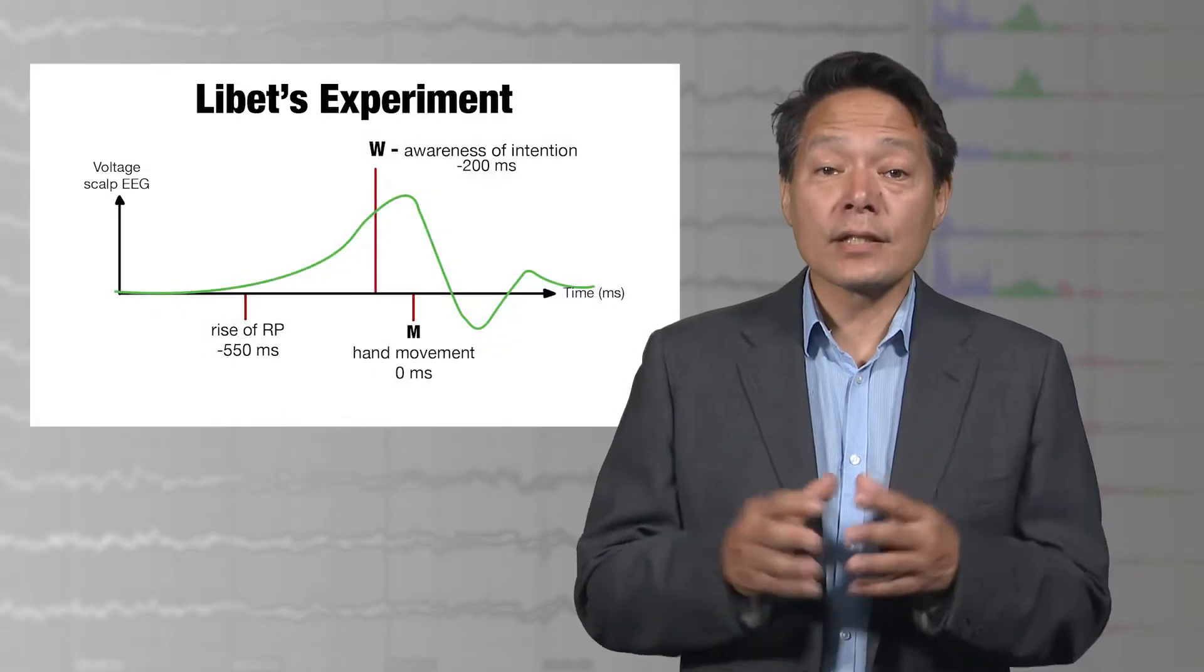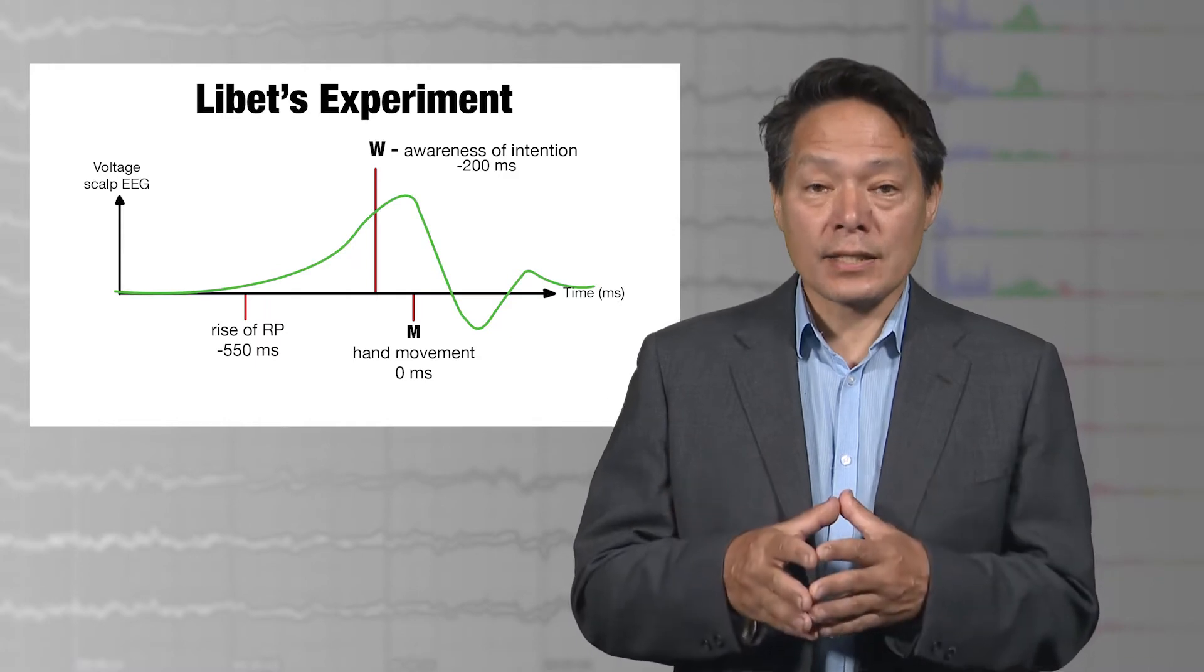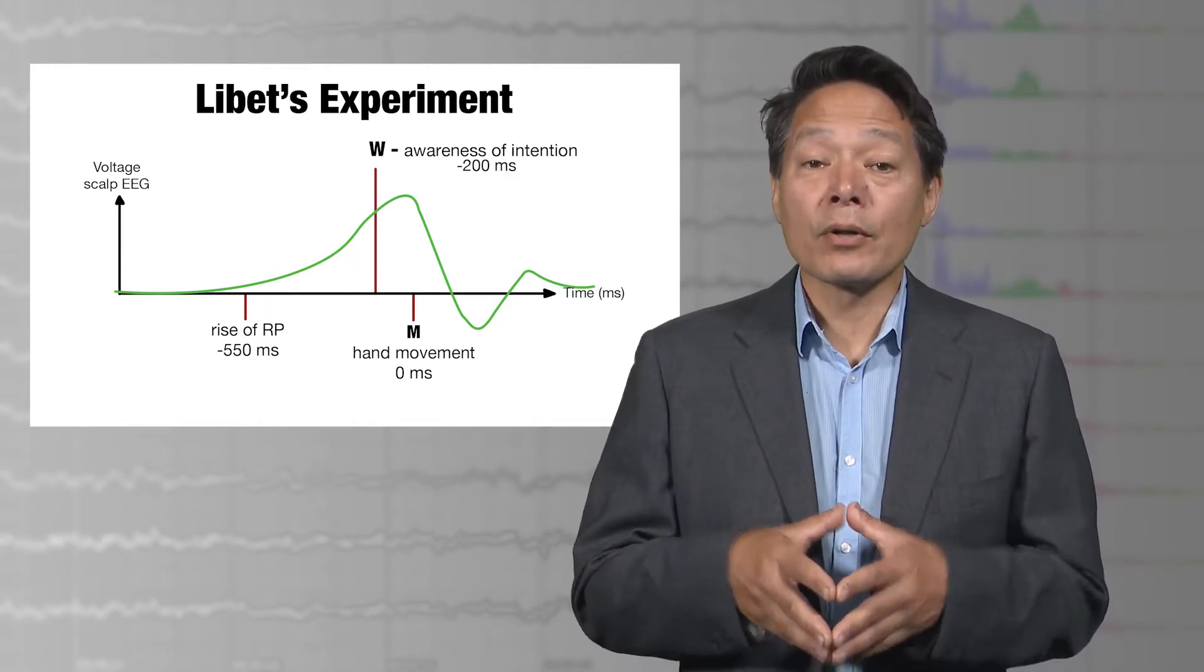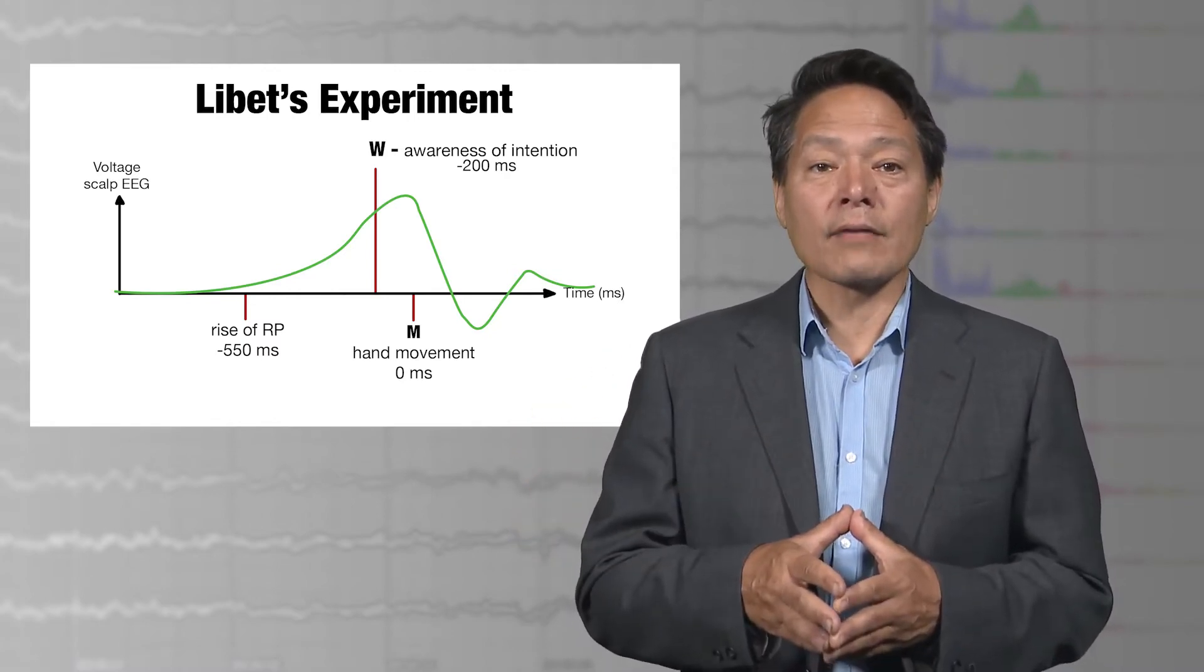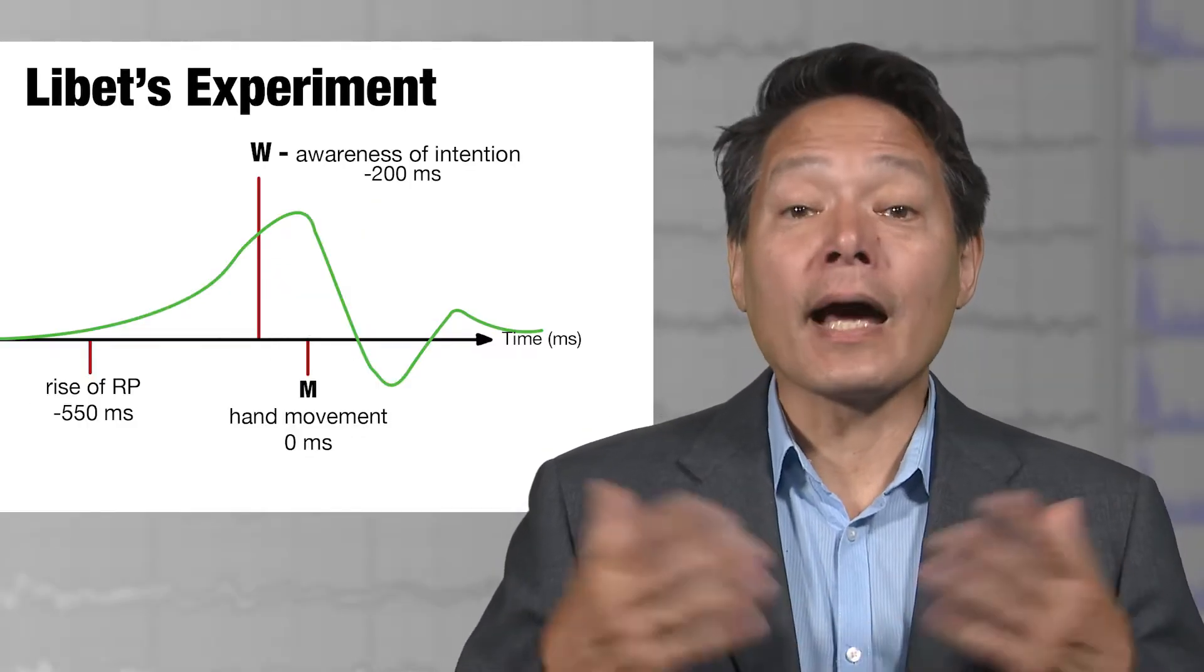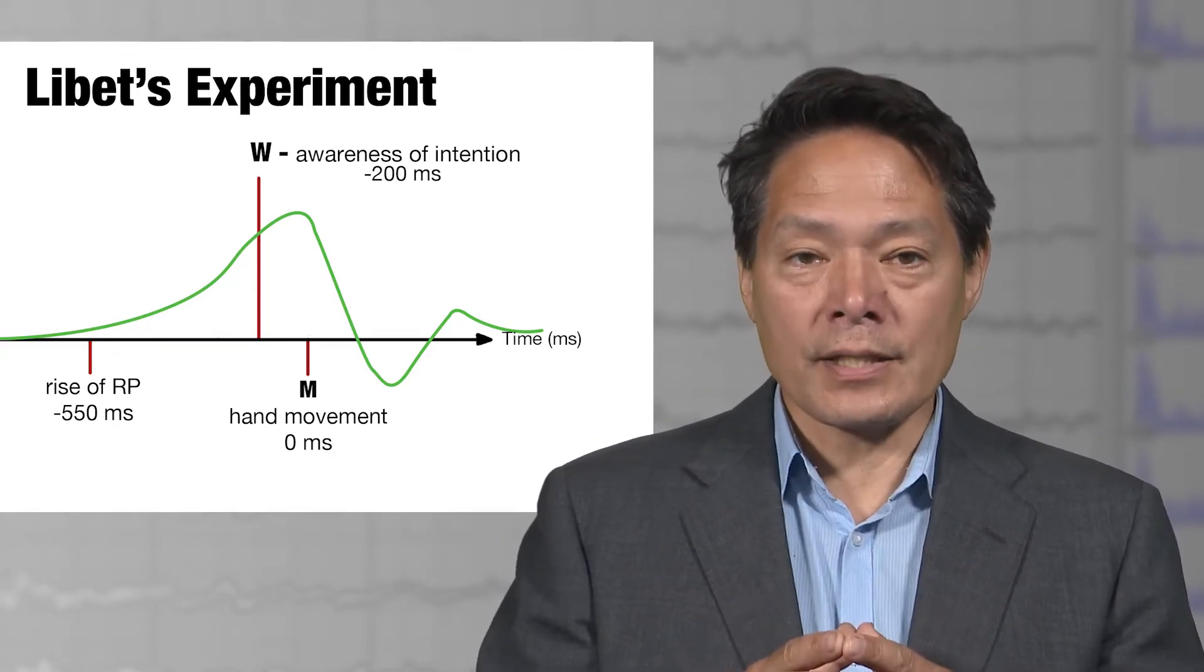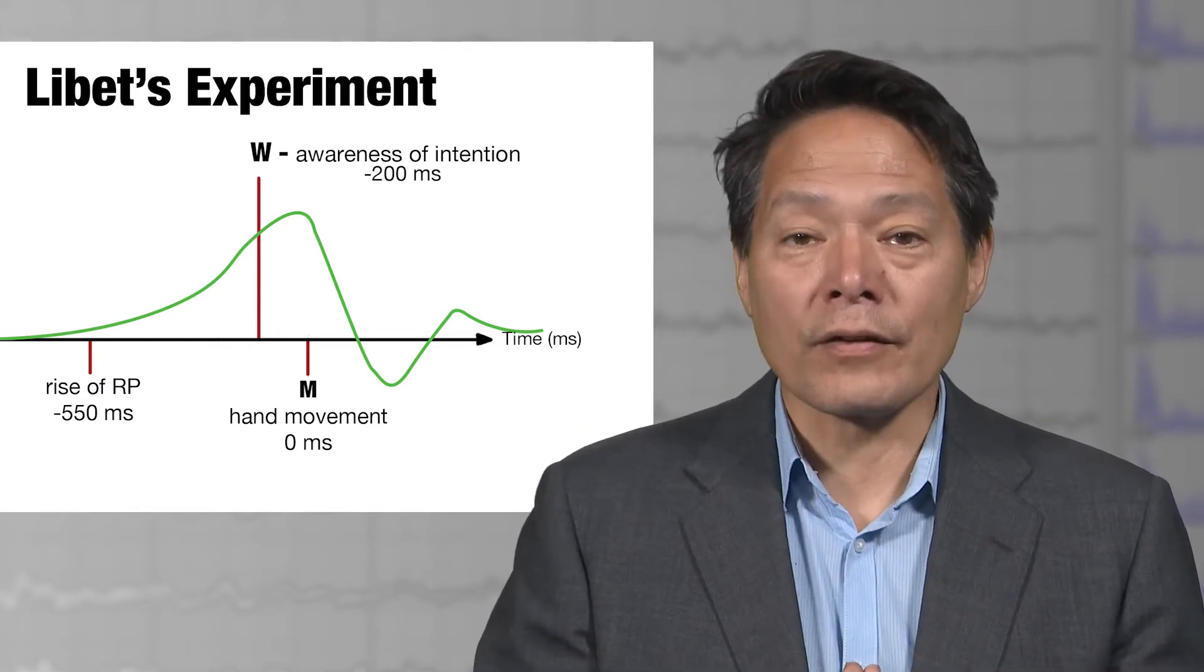According to Libet and others who believe his arguments, what is actually causal of our actions is unconscious activity that precedes the conscious feeling of willing. This unconscious activity is taken to both cause the subsequent conscious feeling of willing and to cause the motor act that follows a couple of hundred milliseconds after the feeling of conscious willing. Then some scientists make the radical generalization from the conclusion that the conscious feeling of willing is not causal of our actions to the conclusion that nothing that is consciously experienced is causal of our later actions.